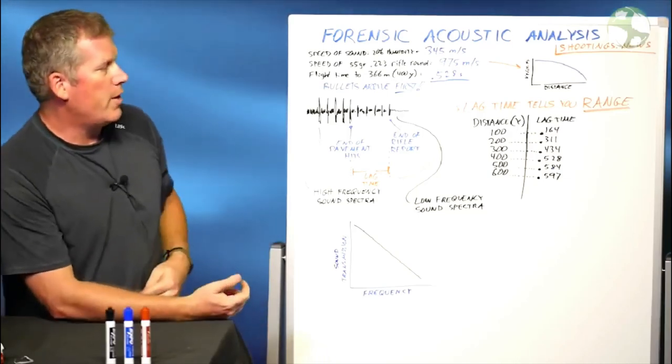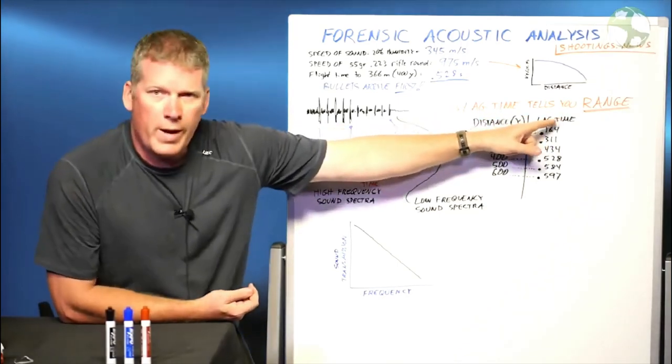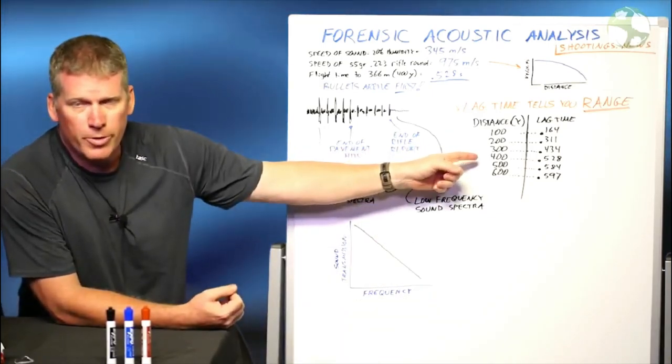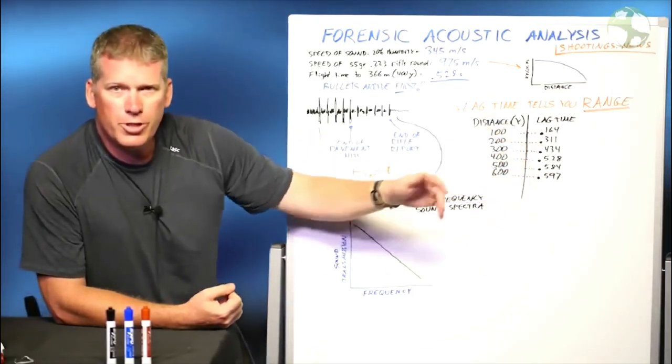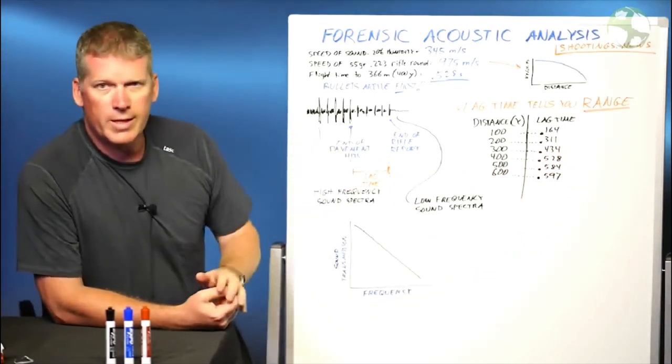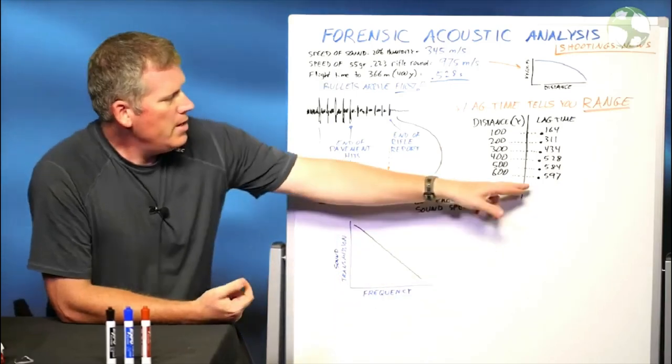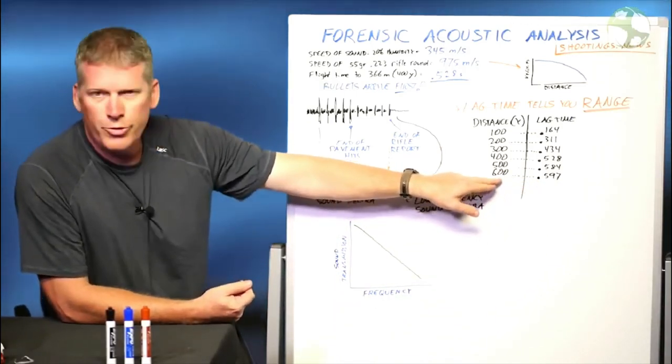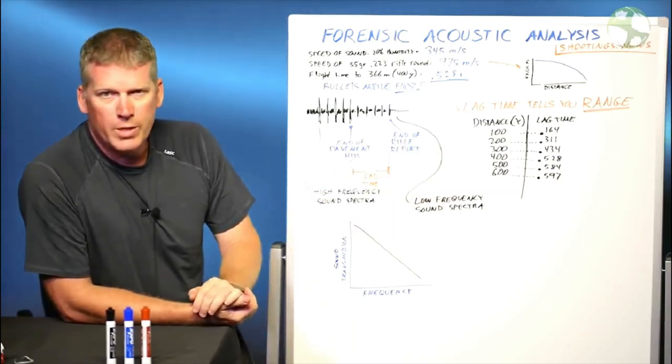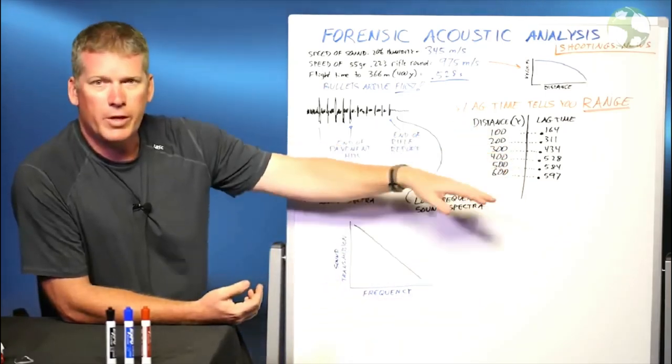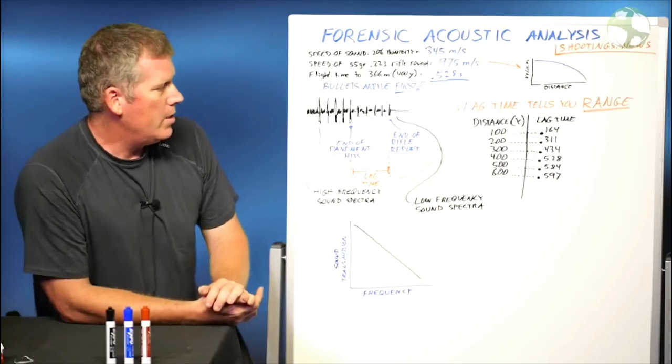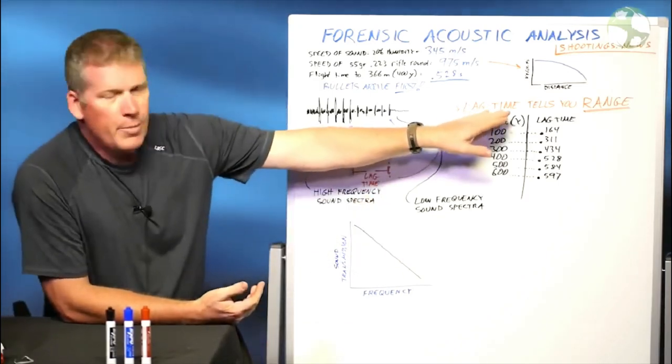What's important to understand is that this lag time, because of the laws of physics and the speed of sound and the ballistics coefficient velocity of the bullet itself, this lag time tells you the distance of the shooter from your present location. The lag time tells you the range of your shooter. If you know the lag time and you know the bullets, the rounds that they're shooting, then you can actually calculate the distance of your shooter. And I put together a little spreadsheet here. Distance in yards, 100, 200, 300 yards. This is the lag time that you would hear if you look at the acoustic analysis of the audio file. As you can see, if you hear a lag time of 0.597, that tells you your shooter is 600 yards away. If you have a lag time of 0.311, your shooter is 200 yards away. This table is only valid for .223 Remington.